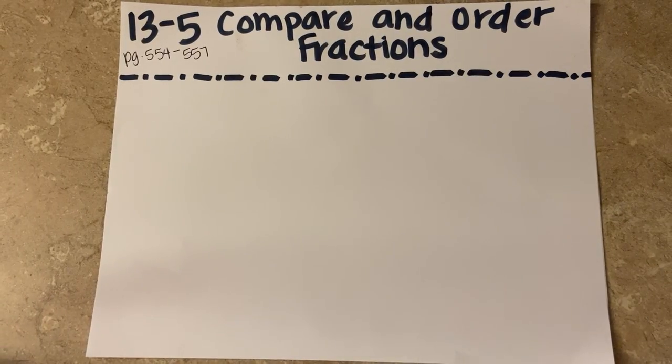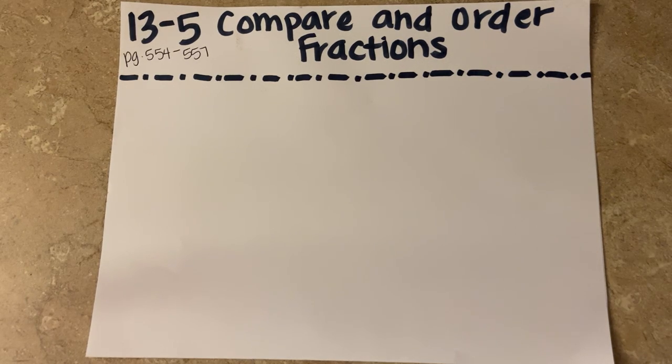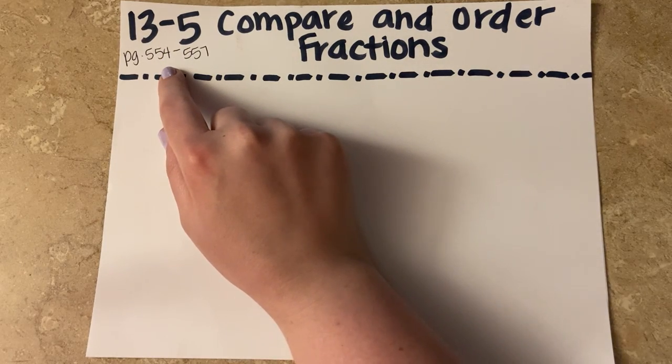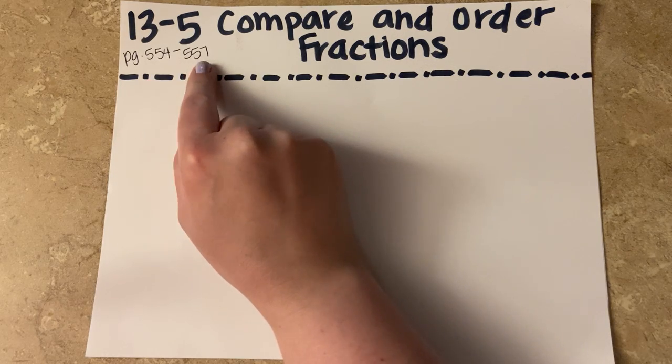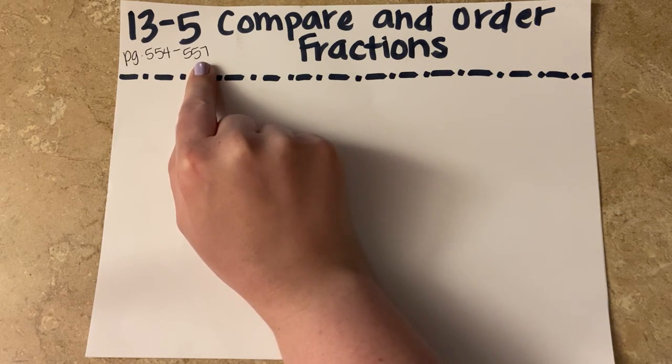Hi, fourth grade math. Today we're going to do a new lesson for 13-5 and this lesson is about comparing and ordering fractions. We're going to do this a little bit different just so I can show you kind of on paper my thinking and just some strategies of how to do this. So you'll notice I put page number up here. If you want to follow with me in your textbook, we're going to start on page 554 and the lesson continues through page 557.